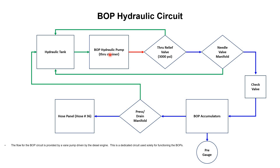The hydraulic tank provides oil to the hydraulic pump. This pump provides a certain pressure greater than 3000 psi; with the help of the relief valve, 3000 psi is maintained for the circuit and the extra pressure goes back to the hydraulic tank. Then, with the help of a needle valve, this pressure is controlled. When the needle valve is in the closed position, pressure is diverted through the check valve to the accumulators and then to the ultimate components. When the needle valve is open, pressure is drained back to the hydraulic tank. On the accumulators there is a pressure gauge which shows the pressure of that circuit — at full RPM and maximum value it will read 3000 psi.